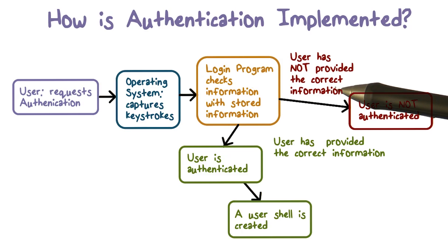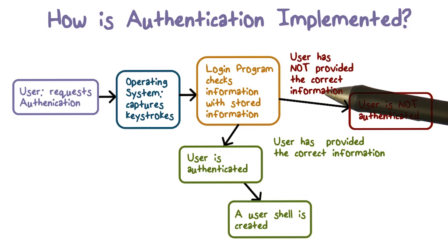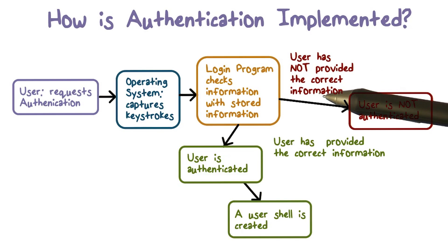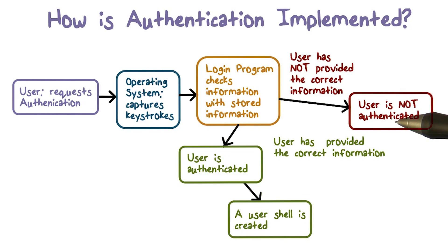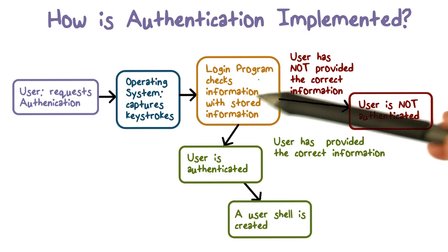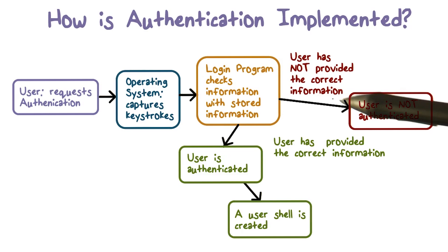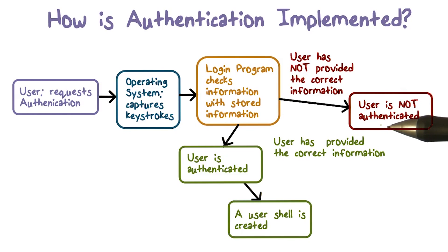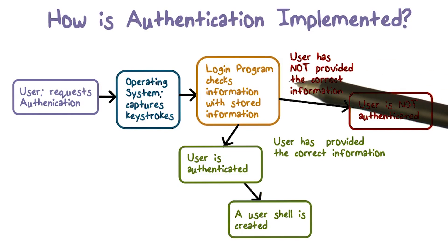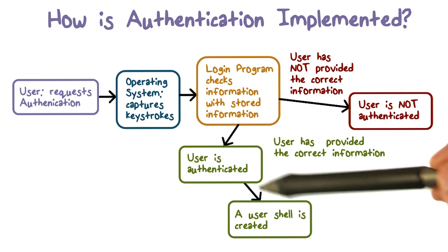The check could fail, and if it fails, the system believes the user has not provided the correct information — meaning it's probably not the user being claimed. The identity being claimed probably doesn't belong to the person asking for authentication; this could be impersonation. So the system doesn't have a match and will not authenticate the user — authentication fails. If Eve tries to log in as Alice and the system says no, that's a true negative. When Alice tries to log in as Alice and succeeds, that's a true positive.